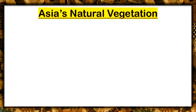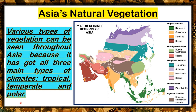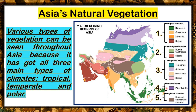Various types of vegetation can be seen throughout Asia because it has all three main types of climates: tropical, temperate, and polar. The major climate regions of Asia are: number one, tropical climates — rainforest, grasslands, semi-arid desert; number two, subtropical climates — humid subtropical and desert; number three, temperate climates — temperate, subarctic, grasslands, desert; number four, polar climates — polar tundra; and number five, highland climates — highland, which varies with altitude.